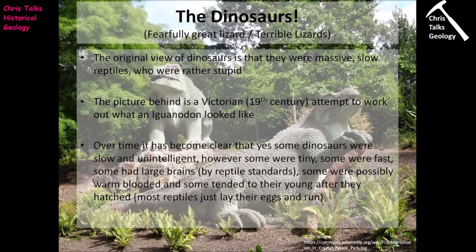The word 'dinosaur' can be translated as 'fearfully great lizard' or 'terrible lizard.' The original view was that they were massive, slow, rather unintelligent reptiles. The picture here shows models produced in the Victorian era — from an area of London called the Crystal Palace, essentially a 19th-century exhibition centre made of glass and wrought iron, unfortunately destroyed in 1936. Around it they constructed a garden with models of what they believed dinosaurs looked like.